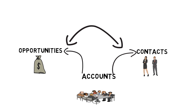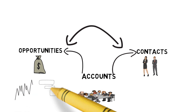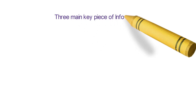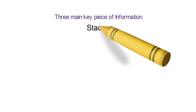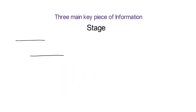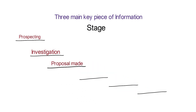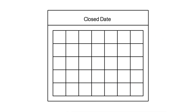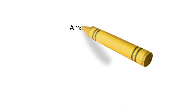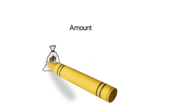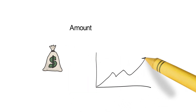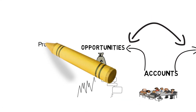Let's talk more about opportunities. There are many implementation-specific details, but there are three main key pieces of information every opportunity has. First is Stage — a picklist that records where the opportunity is in your sales process. It contains values like Prospecting, Investigation, Proposal Made, Negotiation, Closed Won, and Closed Lost. Next is the Close Date — the date by which you believe the deal will be closed, won, or lost.